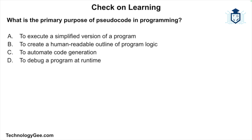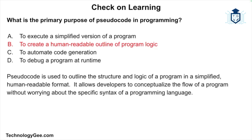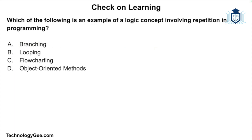Let's do some check on learning. Question one: what is the primary purpose of pseudo code in programming? Is it to execute a simplified version of a program, to create a human-readable outline of program logic, to automate code generation, or to debug a program at runtime? The correct answer is to create a human-readable outline of program logic. Pseudo code is used to outline the structure and logic of a program without worrying about the specific syntax of a programming language.